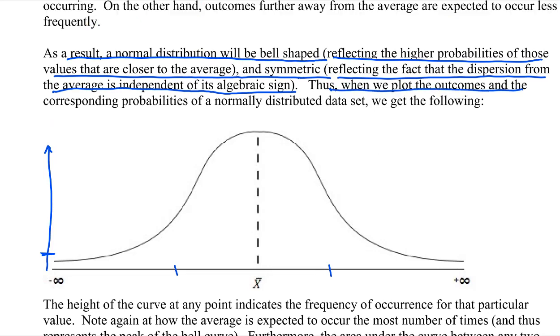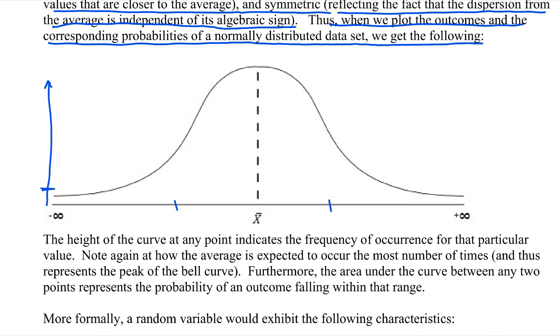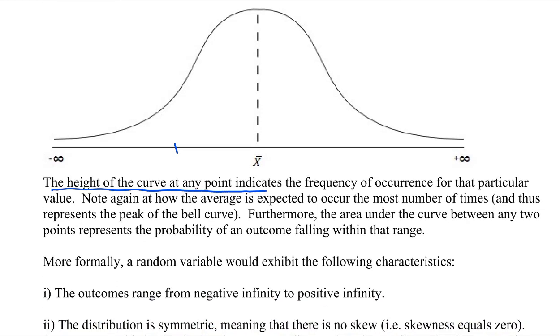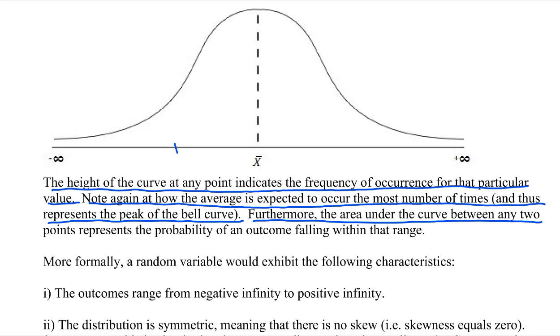Therefore, when we plot the outcomes and their corresponding probabilities of a normally distributed data, we get this bell shape that we're talking about. And again, ladies and gentlemen, I know usually we just see the horizontal axes, but always be mindful that there really is a vertical axis as well, which measures the frequency. In other words, the likelihood of each of these values occurring. There it is, the height of the curve at any point indicates the frequency of occurrence for that particular value. Note again at how the average is expected to occur the most number of times and thus represents the peak of the bell shape. And furthermore, the area under the curve between any two points represents the probability of an outcome falling within that range.